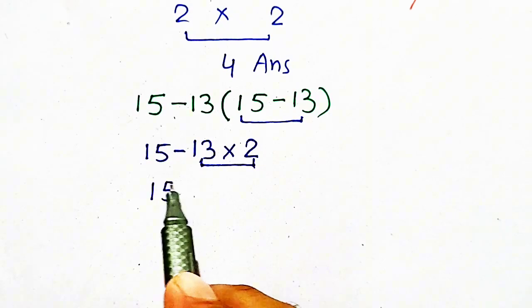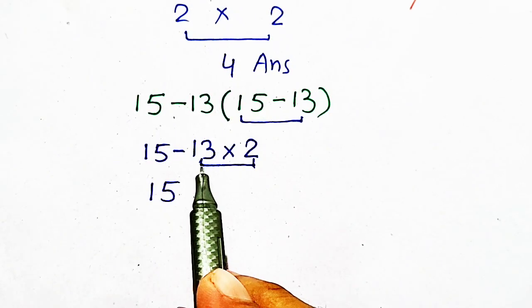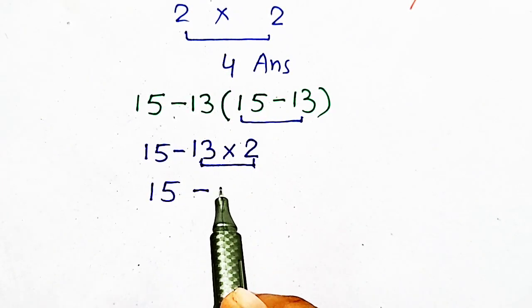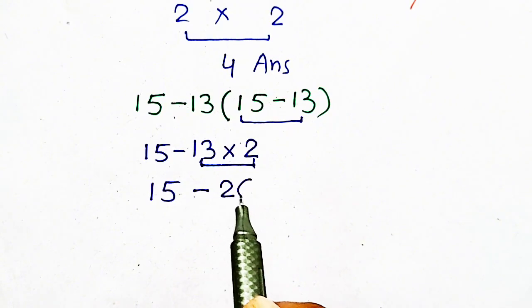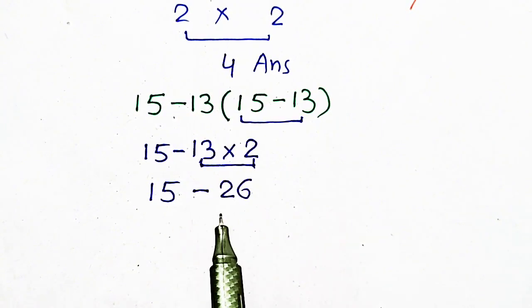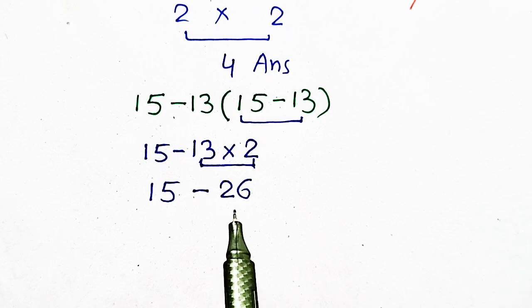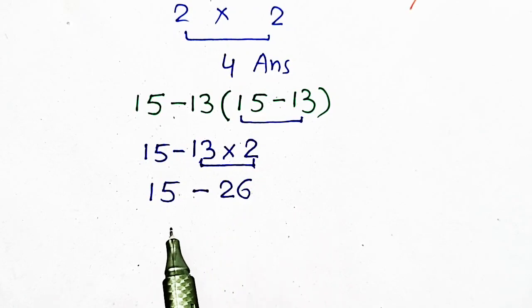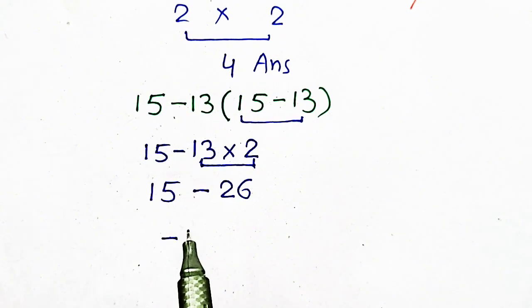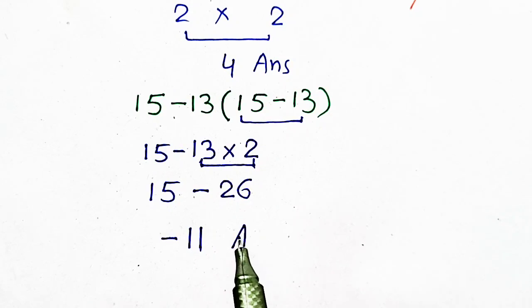Now, 15 minus 13 times 2 will be equal to 26. So, 15 minus 26 will be equal to minus 11, and minus 11 will be our answer.